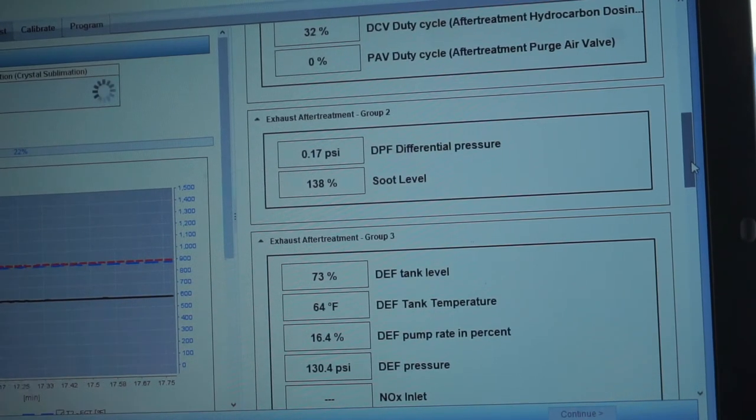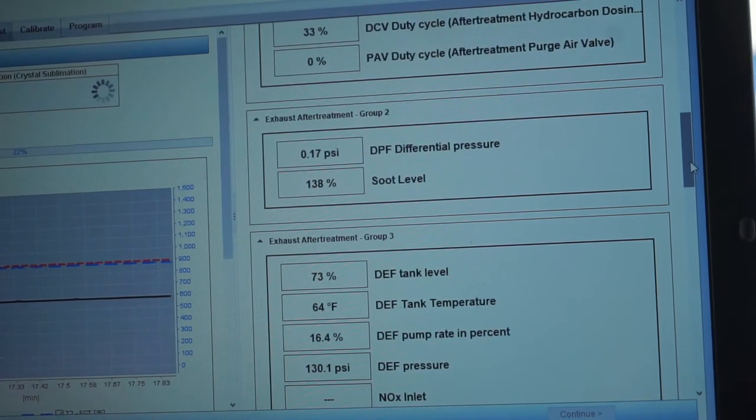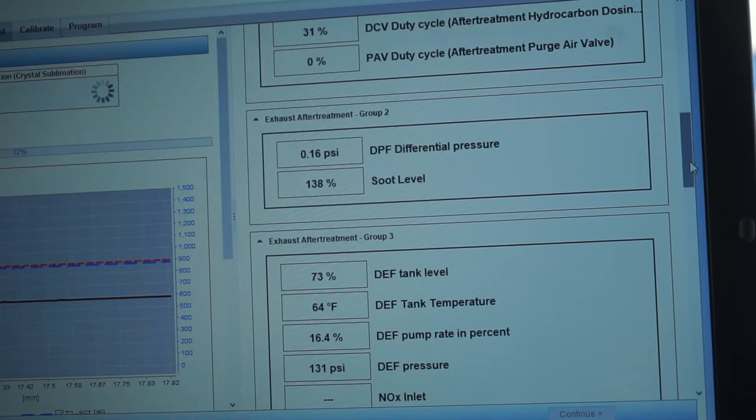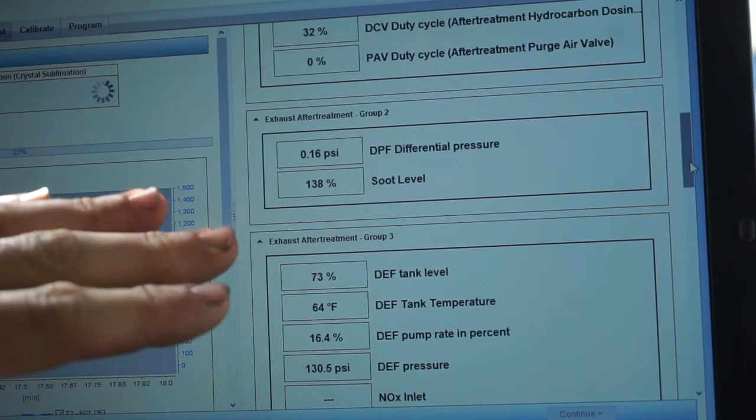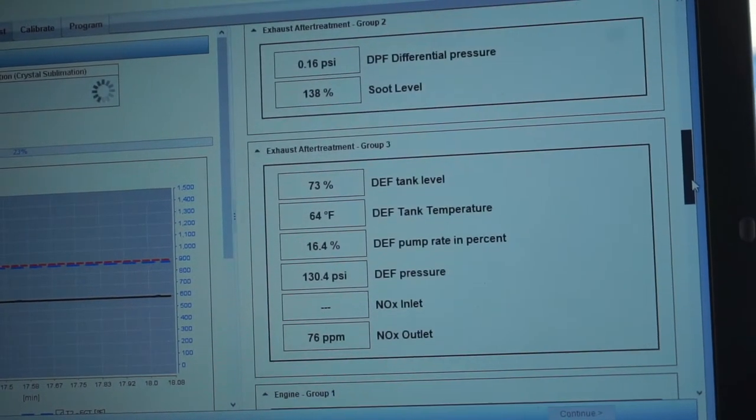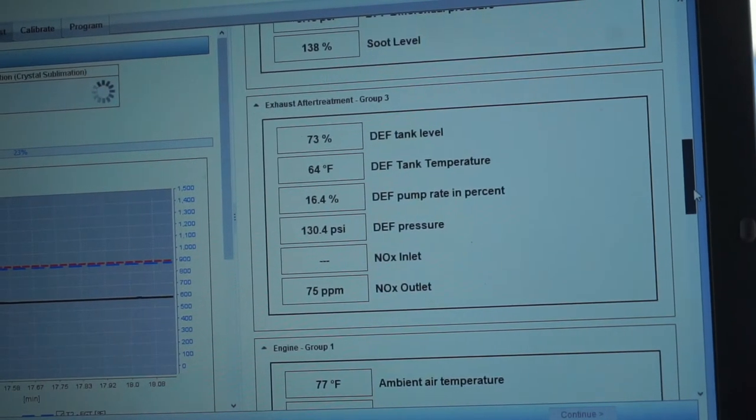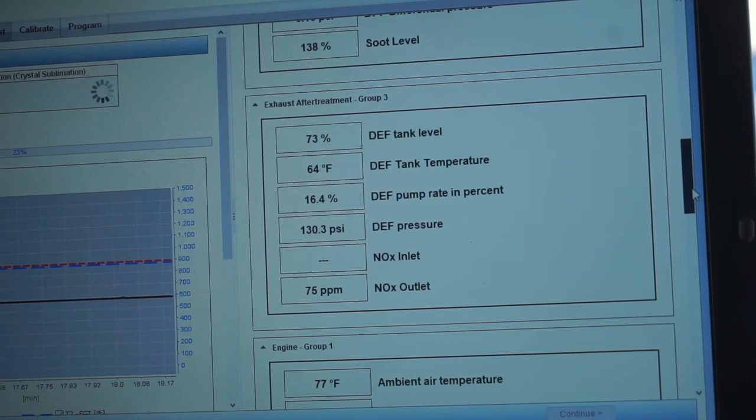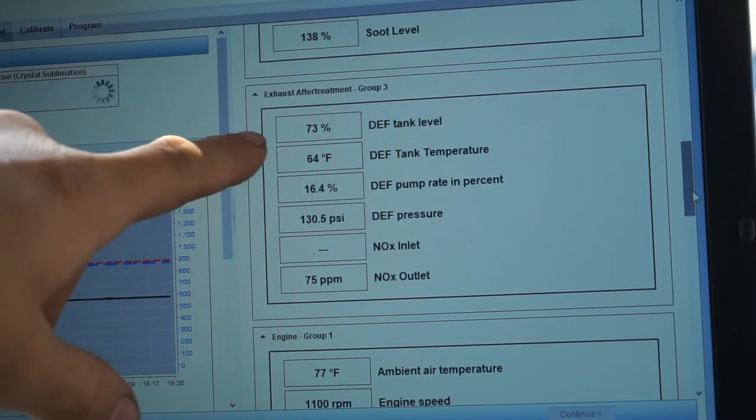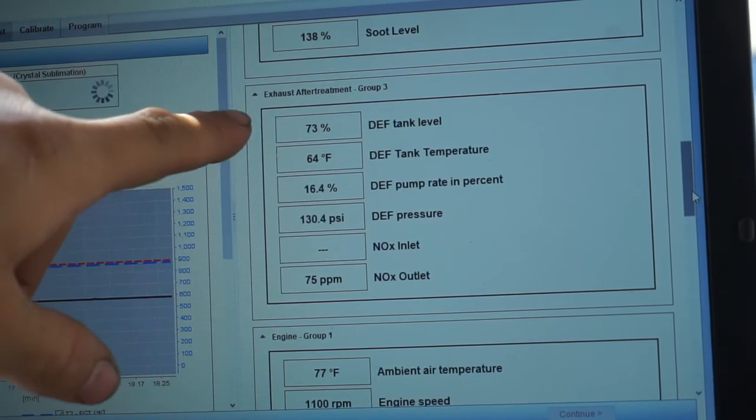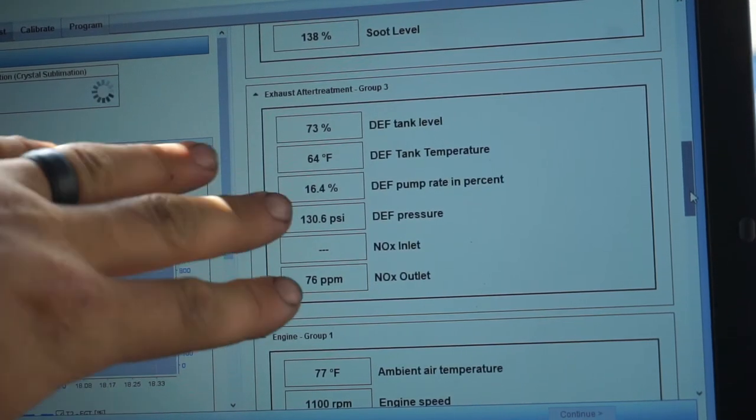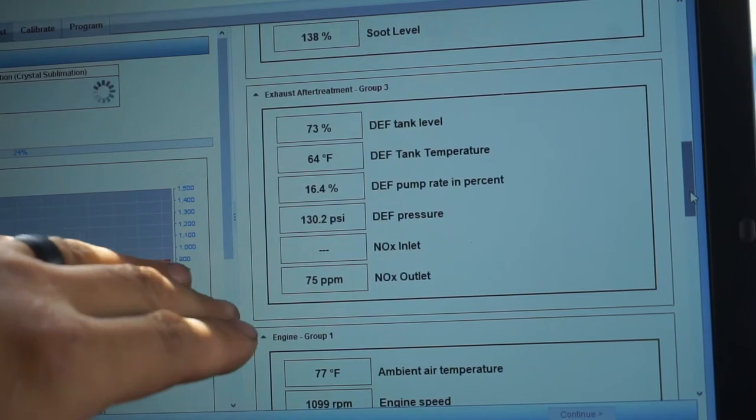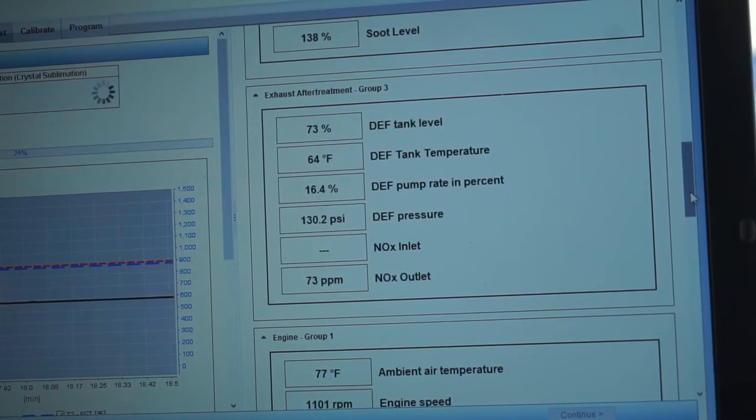With this one, we're actually burning off those crystals from where it's crystallized. When I run the actual DPF or service regen, that's what's going to attack the soot level and bring it down hopefully. Tank level, tank temperature, pump rate, and percent DEF pressure. You can see all this is real time updating as we speak. Everything there is looking good except for that NOx sensor on the inlet. The sensor is not showing, but we did not have any codes once it was cleared for that.